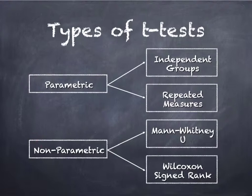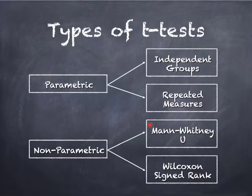T-tests are further subdivided based on how we organize the independent variable. If the independent variable is measured as independent groups — meaning an individual can fit into one and only one group, such as male or female, or trained athlete versus untrained — then you're going to use an independent groups t-test if it's parametric, or a Mann-Whitney U test if it's non-parametric. This is the most common type of t-test done in independent studies.